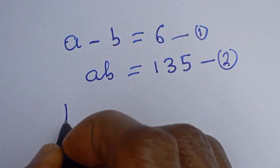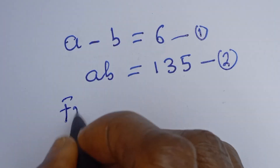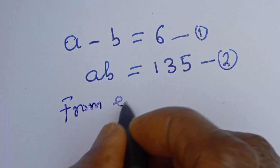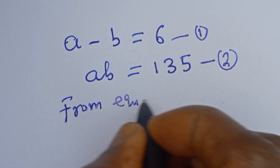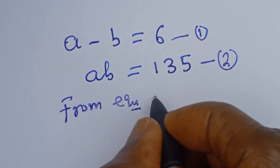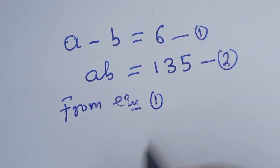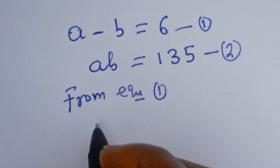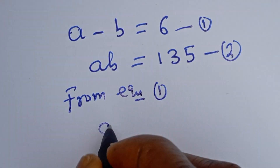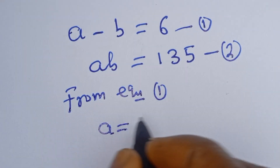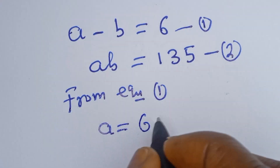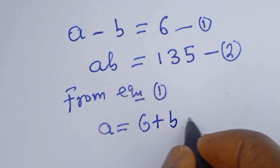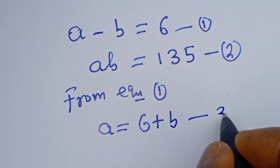From equation 1, let's make A the subject of the formula. A is equal to 6 plus B. Let's call this equation 3.